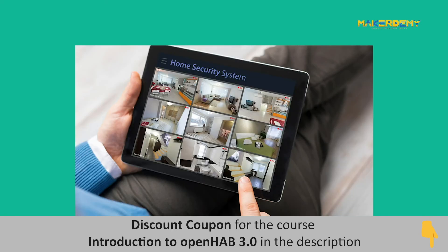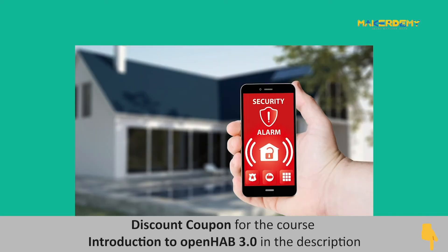Looking into the safety aspects of home automation, there is a large potential in the security features that a smart home provides. For example, a useful feature would be alerting family members via a mobile application whenever there is a security breach or natural disaster.